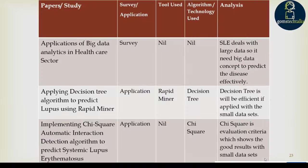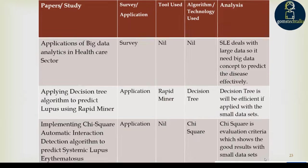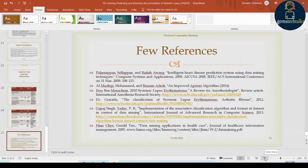I also included the analysis done from my publications — this is like a literature review — showing papers I have published and the research analysis based on them. A few references you must include for sure. It is not mandatory to give complete references; you can give at least five to ten references, which will be fine. This covers everything for the very first doctoral committee meeting.